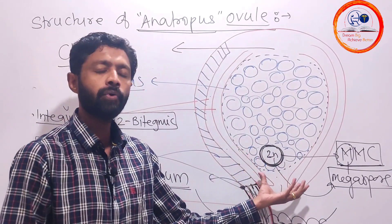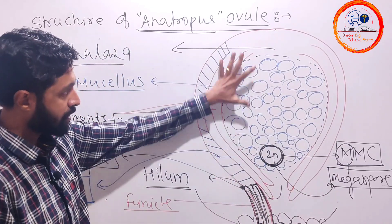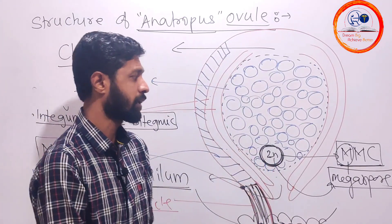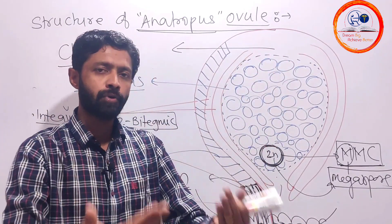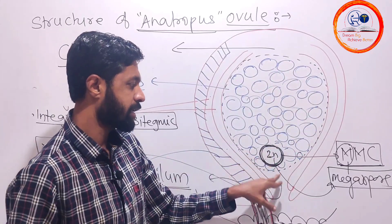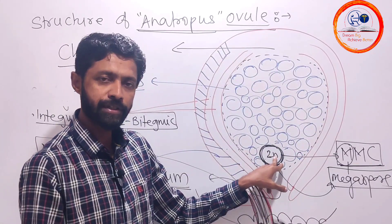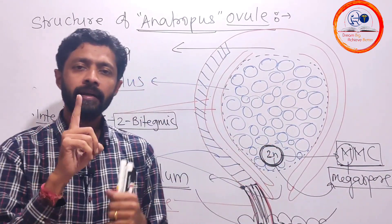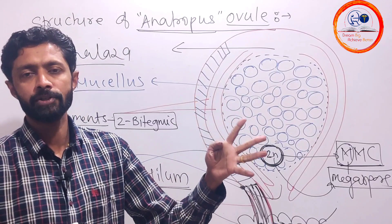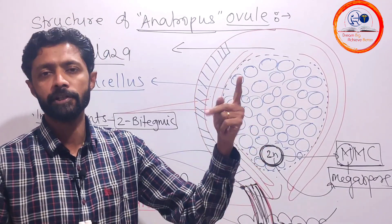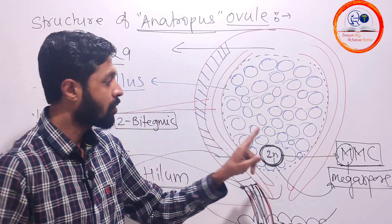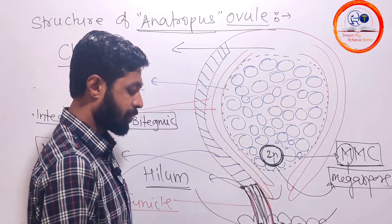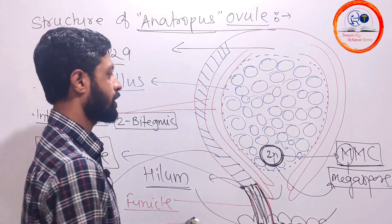In the mature ovule, we consider what happens. As the young ovule becomes mature, one cell of the nucellus toward the micropylar end will differentiate into a megaspore mother cell. In this megaspore mother cell, meiosis occurs and there is formation of four haploid megaspores. Out of those four haploid megaspores, only one megaspore will remain viable. In that one megaspore, there will be three successive mitotic divisions.